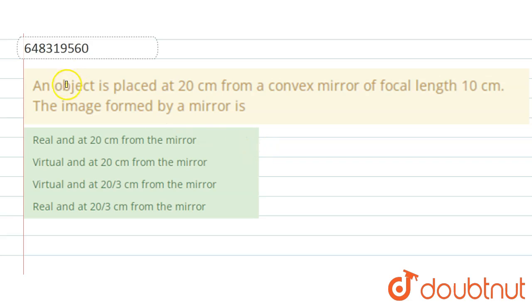Hello, the question is: an object is placed at 20 centimeter from a convex mirror of focal length 10 centimeter. The image formed by a mirror is what? Now here the object is placed at 20 centimeter from a convex mirror.